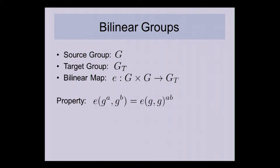Furthermore, we want the property that there's no efficiently computable isomorphism from the target group back to the source group. So what the bilinear map gets you is effectively a one-time-only multiplication in the exponent. On either side of this you can do the normal group operations that give you addition in the exponent.